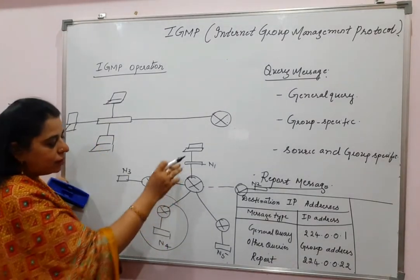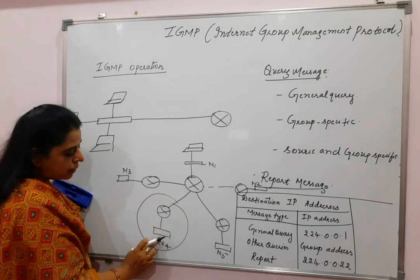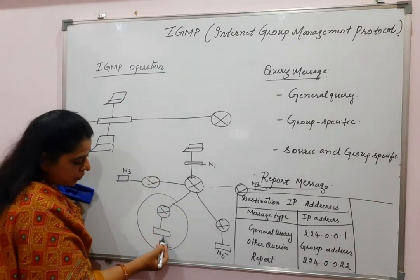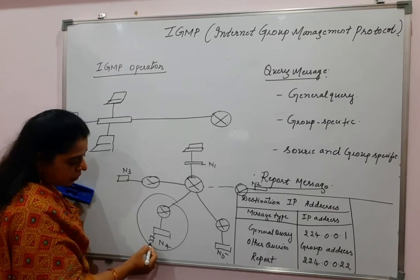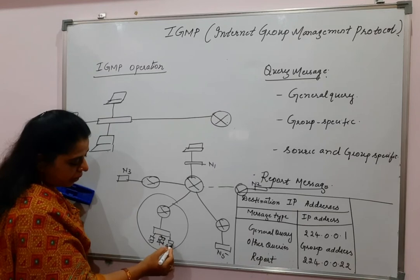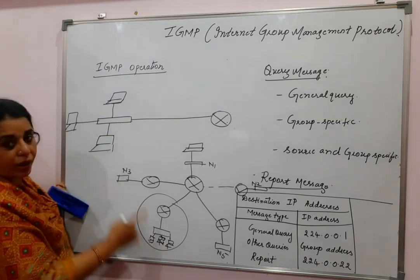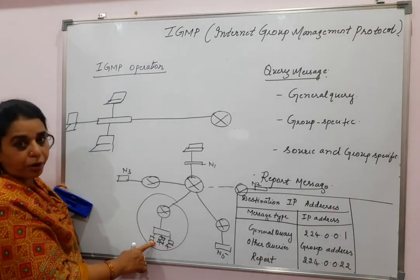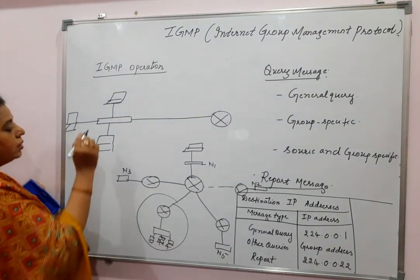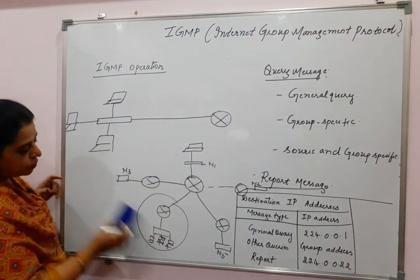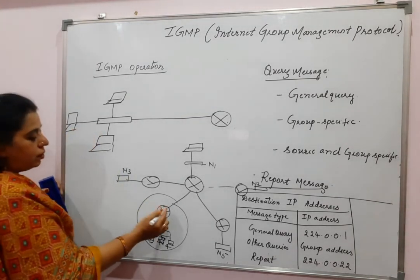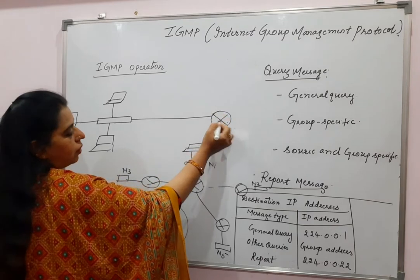When we say N4, N5, N1 are the group members, actually in each of these networks are the hosts that are present. These hosts can be the members of any group. When there is even a single host which is a member of the group, then N4 also becomes automatically a member of the group. How does the router collect membership information? It sends a query message.